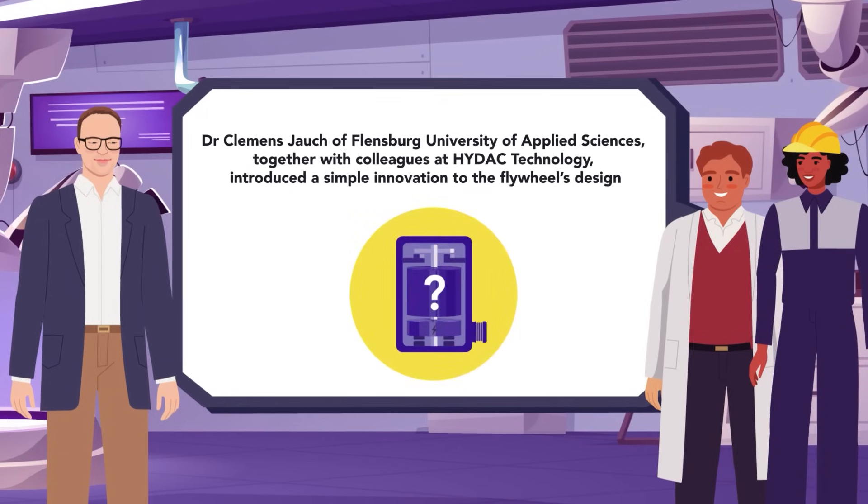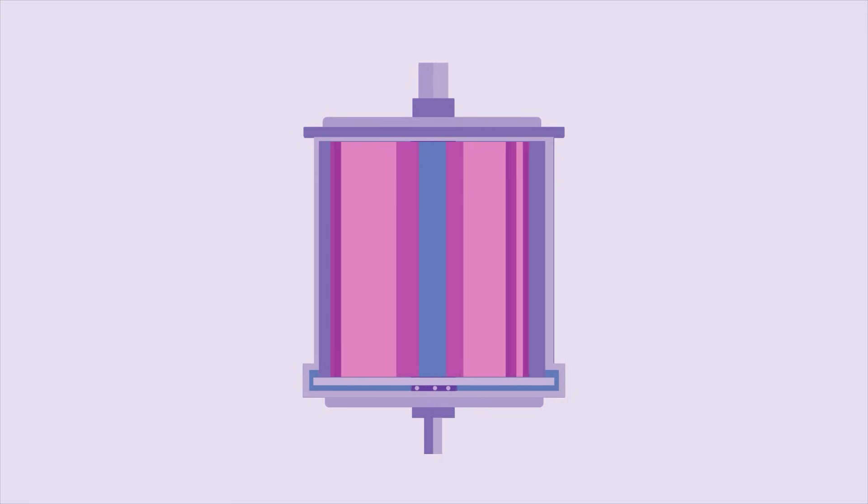Their design replaces the flywheel's traditional solid mass with a rotating hydraulic fluid. Within the device, the non-compressible fluid is allowed to flow between a central cylinder and the hollow walls of an outer cylinder, both rotating about the same central axis.